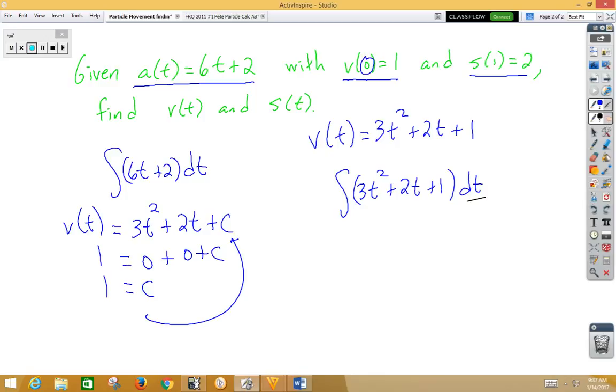If we integrate 3t squared, we get t cubed. If we integrate 2t, we get t squared. If we integrate 1, we get 1t plus c is equal to s of t. Well, now we're plugging in a 1 for t, so I've got 1 cubed plus 1 squared plus 1 plus c is equal to 2. Well, that would be 2 is equal to 3 plus c, so c is negative 1.